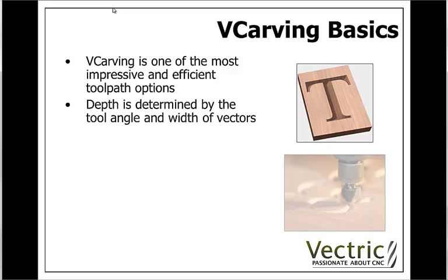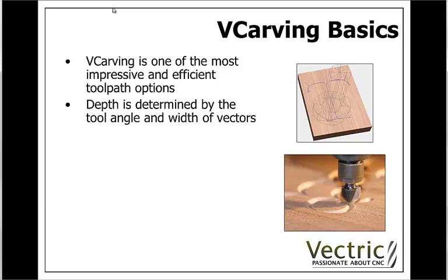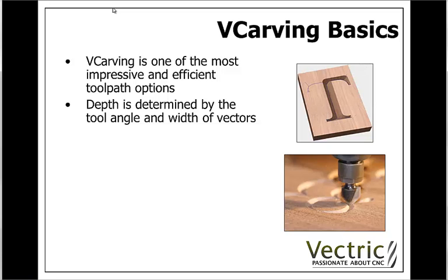Some things that are important to understand with VCarving is that the depth is determined by the tool angle and the width of the vectors. The wider the vectors are, the further down into the material the tool will be able to fit. So if you imagine a triangle drawn down at the angle of the tool, you can see as that triangle gets bigger or as the vectors are wider, then the tool is going to be able to go deeper. Understanding that VCarving is determined by the angle of the tool and the width of the vectors is really important to choosing appropriate tooling when you come to do your machining.